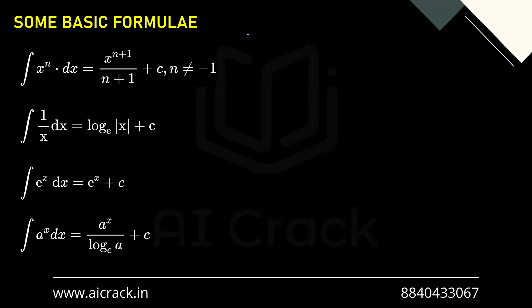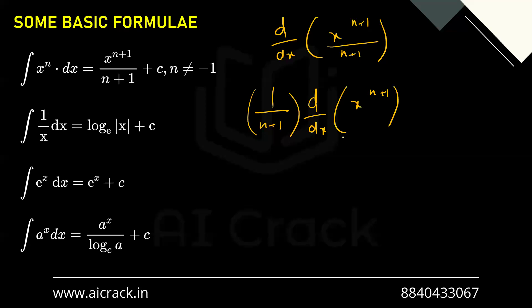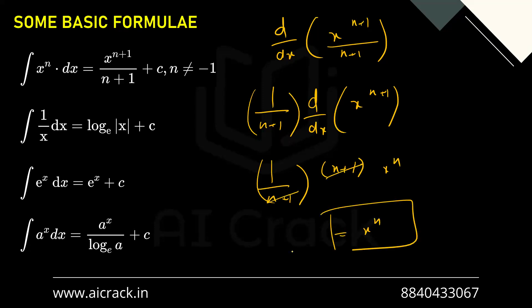Now let's talk about some basic standard formulae based on the definition — that is, the reverse of differentiation. We're not applying any method here; we're just doing the reverse of differentiation. So let's differentiate d/dx of x^(n+1) divided by (n+1). We take 1/(n+1) as common outside, giving us 1/(n+1) times d/dx of x^(n+1), which equals 1/(n+1) times (n+1)·x^n. The (n+1) terms cancel, so we get x^n. Therefore the integral of x^n is x^(n+1)/(n+1) plus c.